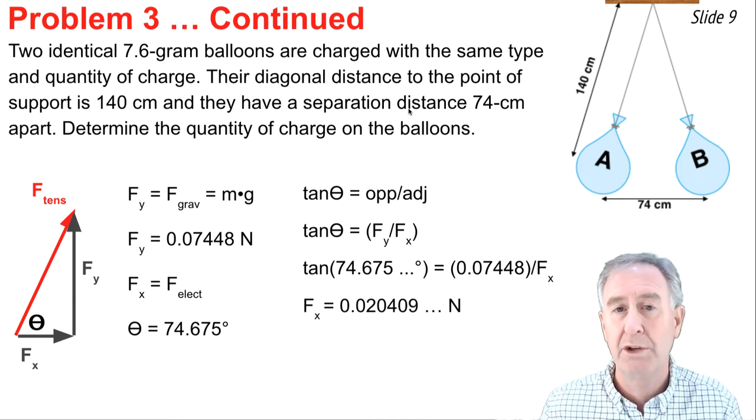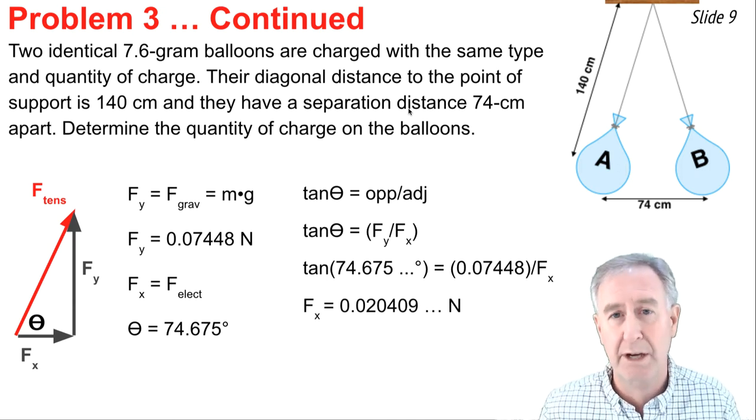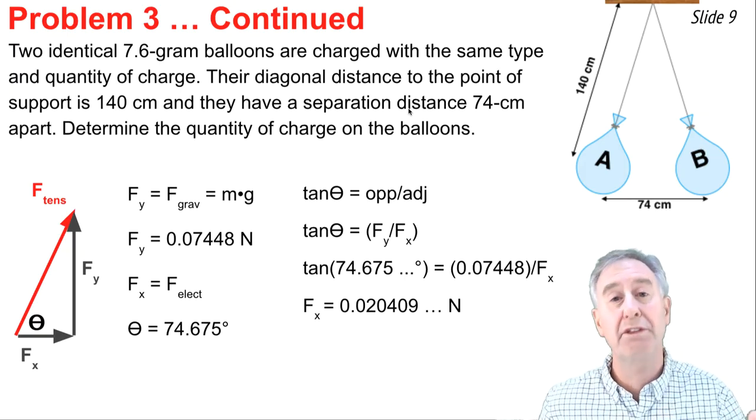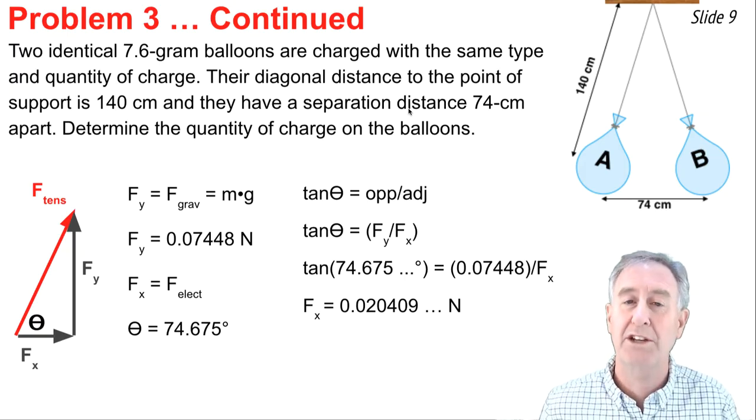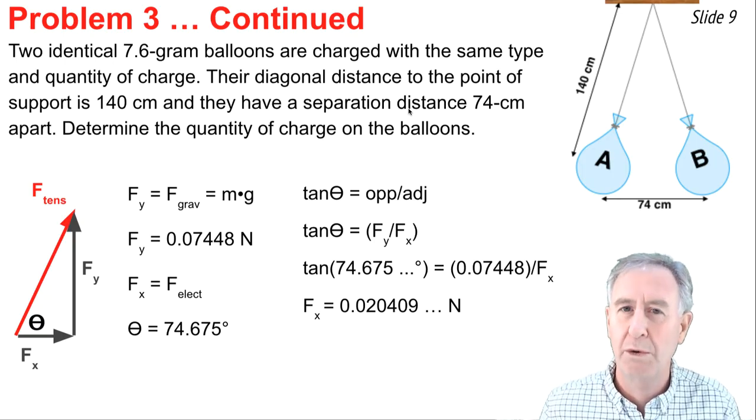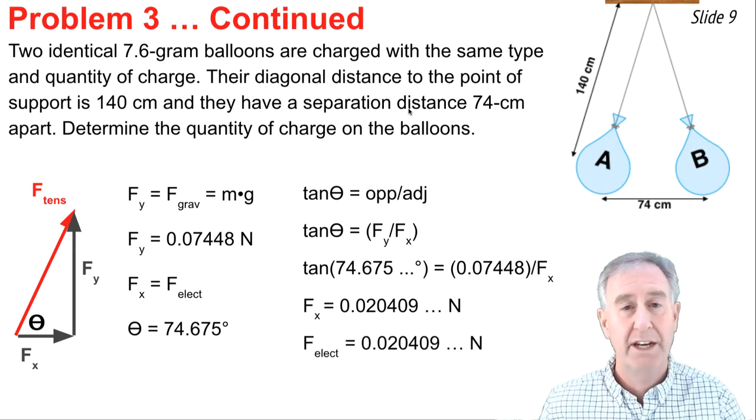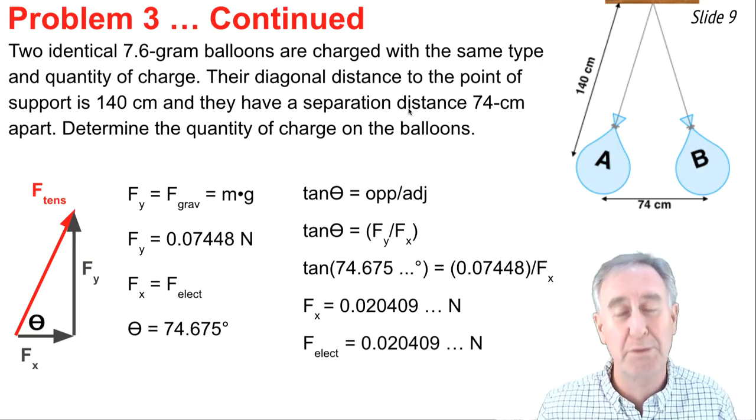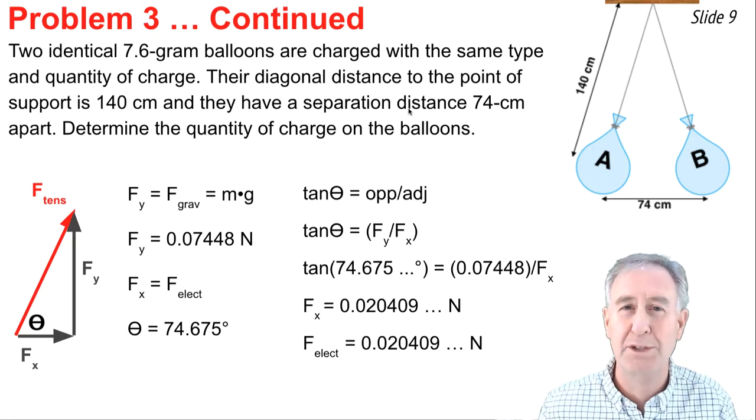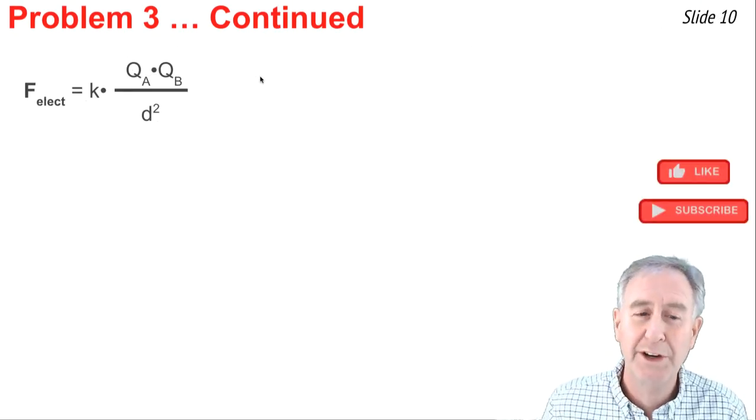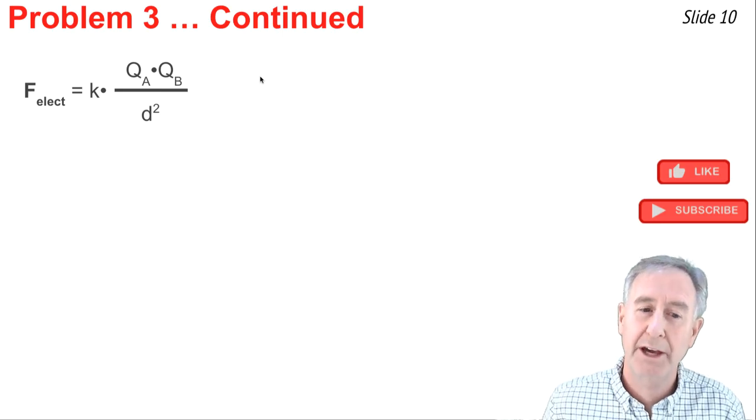And here's the steps that you're going to do. You're going to multiply both sides of the equation by Fx to remove it from the denominator on the right side, and then divide through both sides of the equation by the tangent of 74.675. And you end up getting 0.020409 and some change. Newtons is the value of Fx. Now this is equal to the electrical force since they're both directed in opposite directions horizontally.